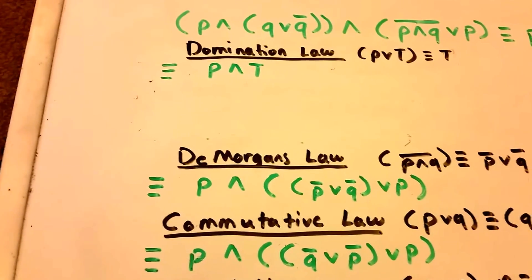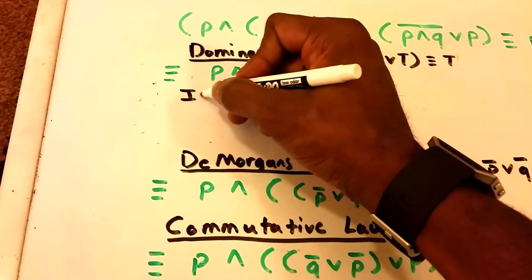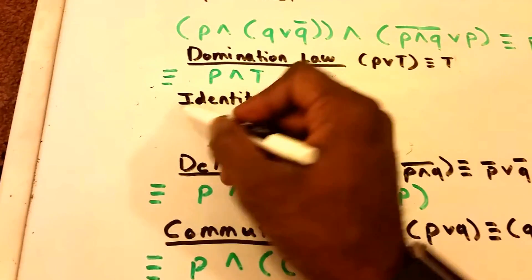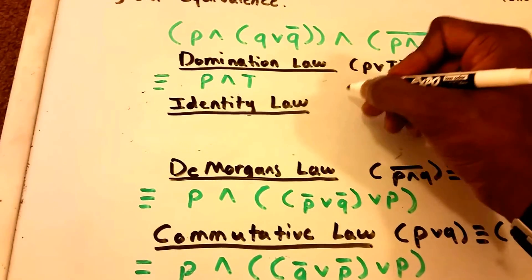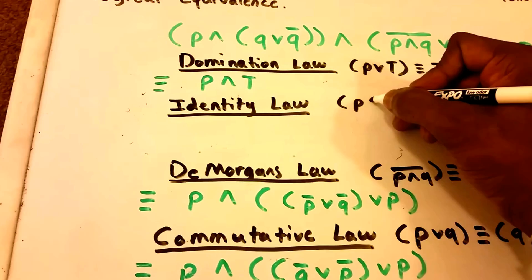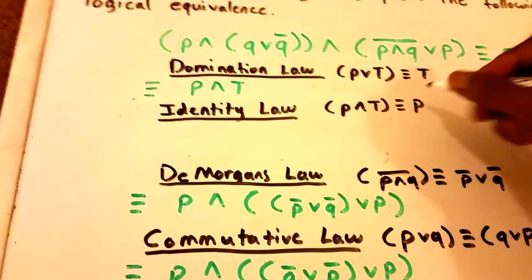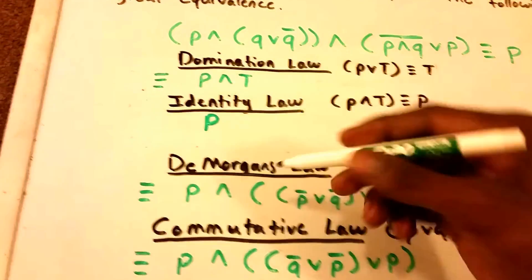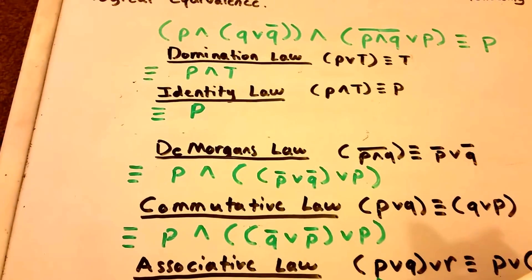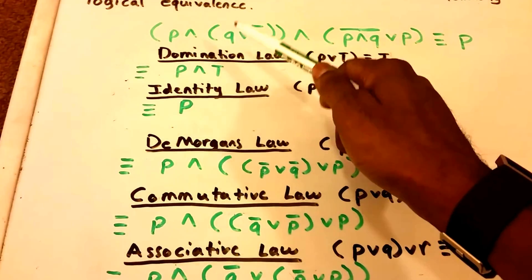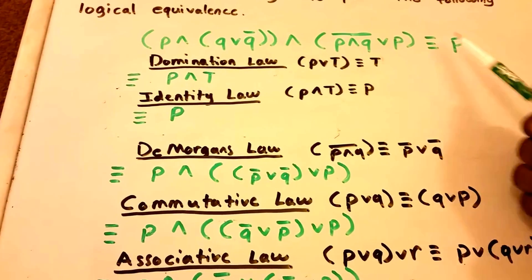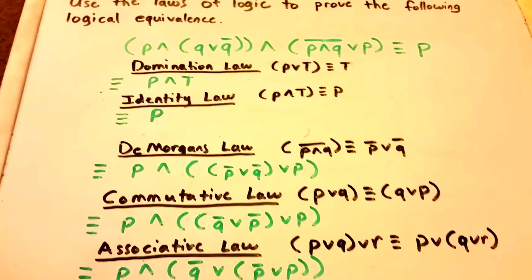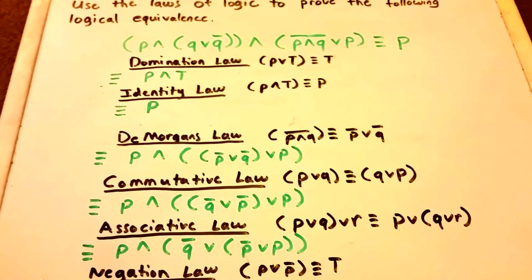Now we apply the Identity Law one more time. The Identity Law states that P∧True is logically equivalent to P — which is exactly what we want to show. So we get just P, and we've shown that the left-hand side is logically equivalent to P, the right-hand side.